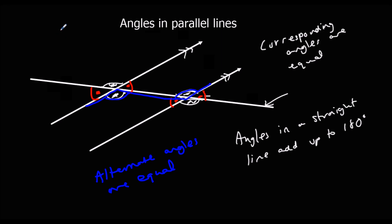Another type of angles are opposite angles. The two angles opposite each other are always equal, so opposite angles are equal.